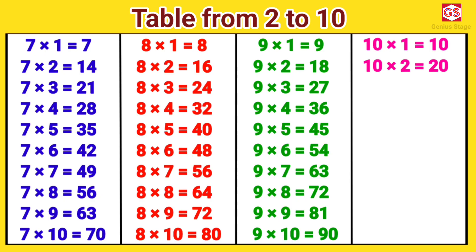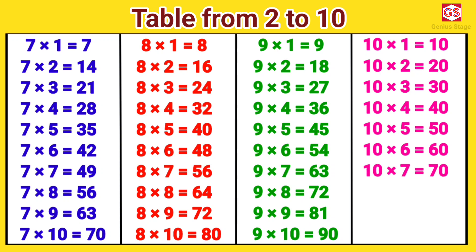10 twos are 20. 10 threes are 30. 10 fours are 40. 10 fives are 50. 10 sixes are 60. 10 sevens are 70. 10 eights are 80. 10 nines are 90. 10 tens are 100